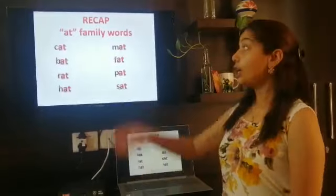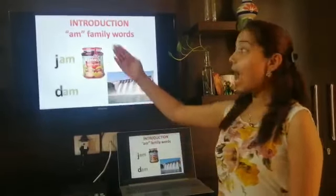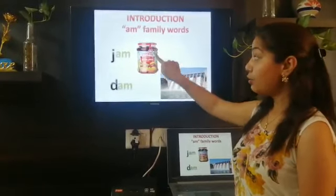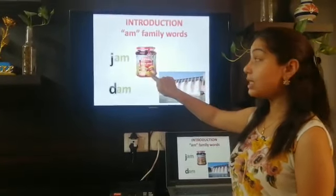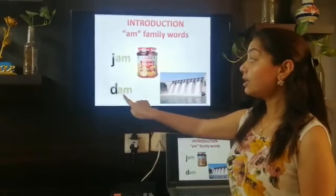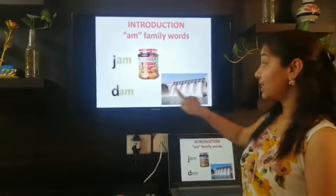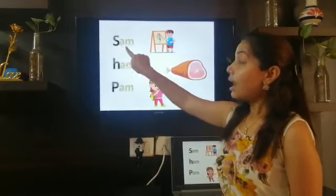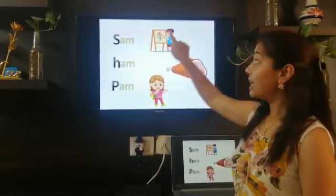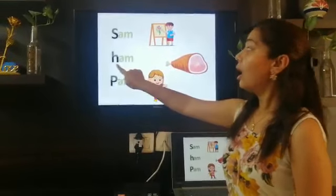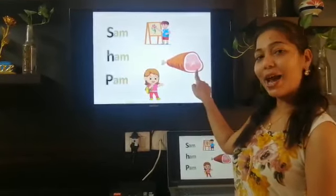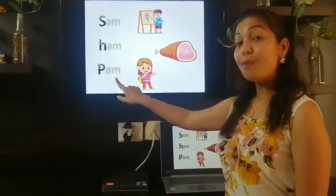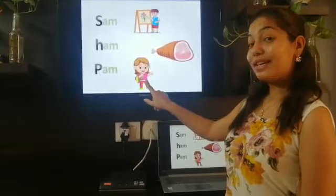Now let's start the introduction of the AM word family. J and AM: jam. Can you see the jam bottle here? This is jam. D and AM: dam. This is dam. S and AM: Sam. His name is Sam. H-AM: ham. P and AM: Pam. Her name is Pam.